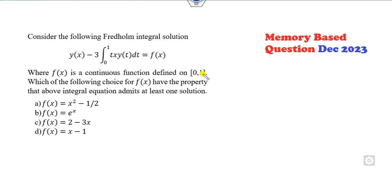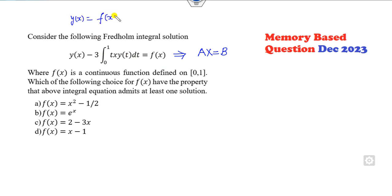Let's start with this question. You can see the limits are finite. So your target is to convert this into a system of equations. Once you know the system of equations, you can get your answer very easily. You can compare this equation with f(x) plus lambda times the kernel K(x, y) of y(t) dt, with limits from a to b.